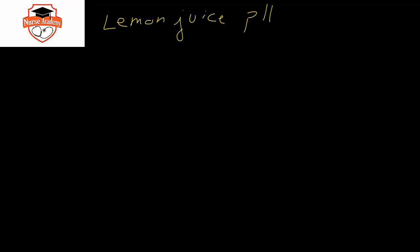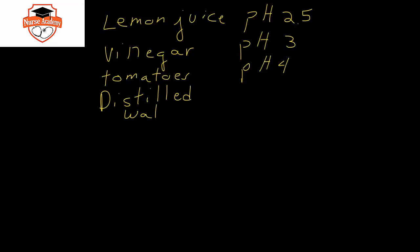Some common household products that we might look at the pH of would be, for instance, something like lemon juice that has a pH of about 2.5. Household vinegar has a pH around 3. Tomatoes have pH around 4. Distilled water has a pH of 7, so right at neutral.